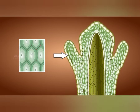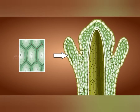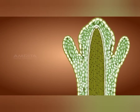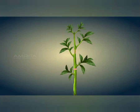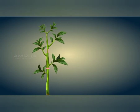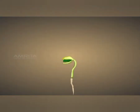The cells of meristematic tissue generally have thin cell walls and they will have a prominent and easily visible nucleus, as their main function is division. Depending upon the place where they are located, meristems are divided into apical, lateral and intercalary meristems.